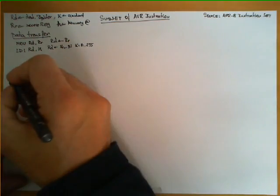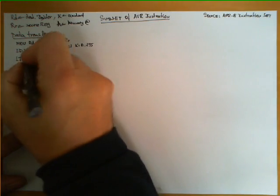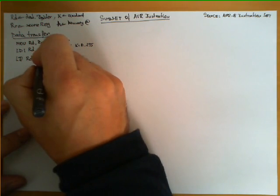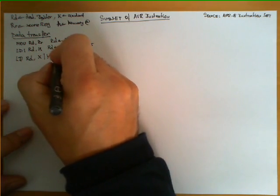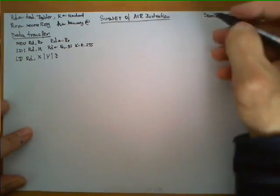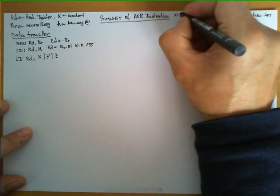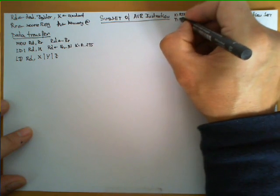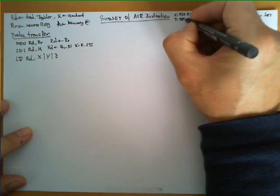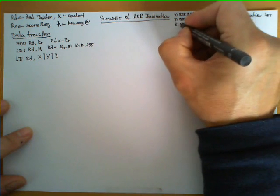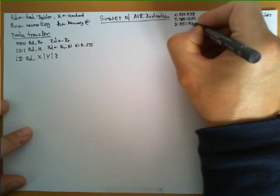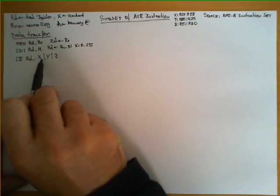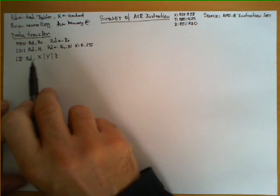This restriction comes from the encoding because it uses 16 bits for the whole instruction. Another interesting instruction is LD, which brings data from memory into register RD. The three possibilities are to specify register X, register Y, or register Z. Register X is the concatenation of registers R27 and R28, register Y is obtained by concatenating R29 with R30, and Z is obtained by concatenating R31 with R30.